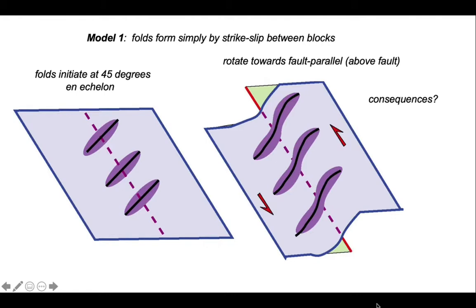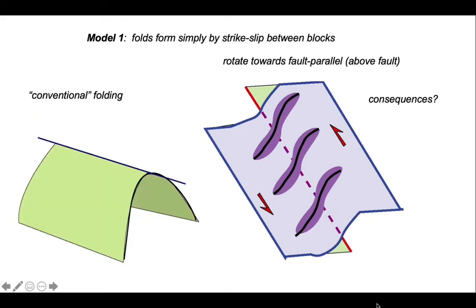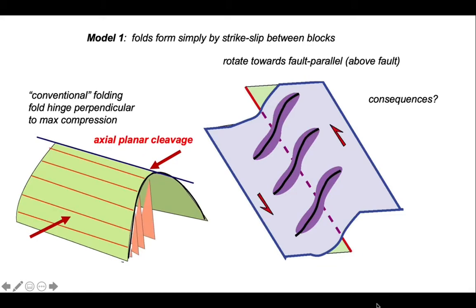If we let this process continue, they'll spin around to become nearer parallel to the fault trace. So what are the consequences of this type of deformation? In conventional folding, the hinge line of the fold forms perpendicular to the direction of maximum compression, and consequently the cleavage in that fold is axial planar. In other words, the bedding-cleavage intersection is parallel to the hinge line of the fold. But not in the case that we're looking at in strike-slip model 1.